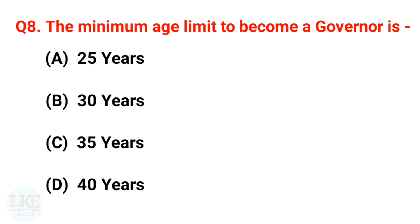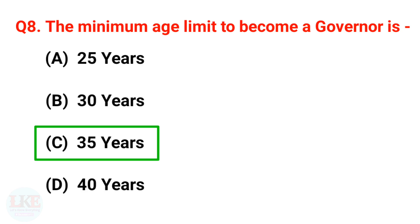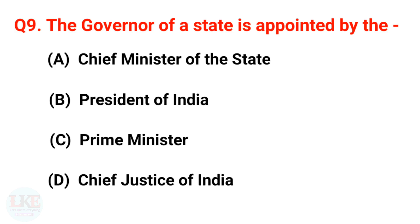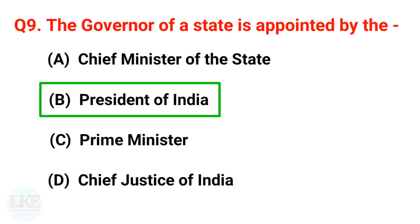The minimum age limit to become a Governor is 35 years. The Governor of a state is appointed by the President of India.